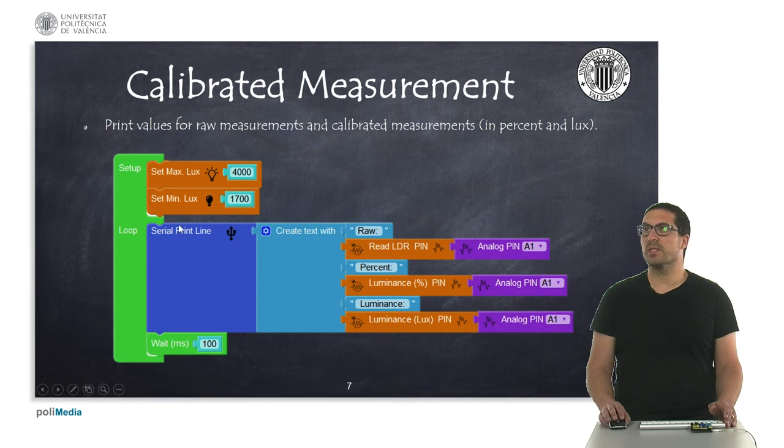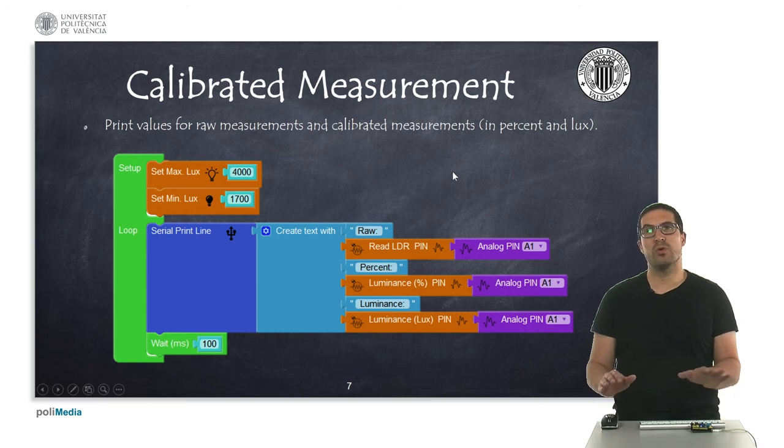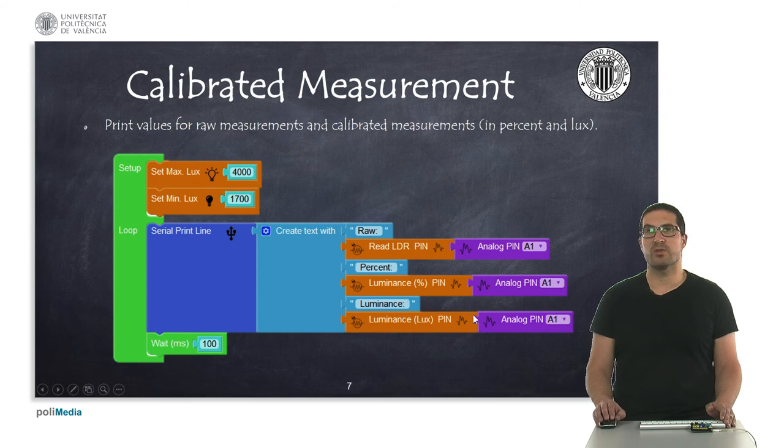And in the second example, what we are saying is, in our environment conditions, this is the maximum luxes that we expect, so this will represent the 100%, and these are the minimum luxes that we expect when we consider this dark. And this is the raw value, this is the percent value, and this is the luxes value of the luminance. Here we just simply use this example to show you the different things. This is the uncalibrated measurement, and these two are calibrated measurements.